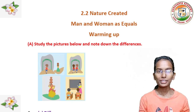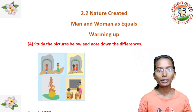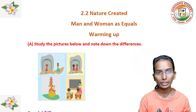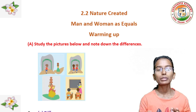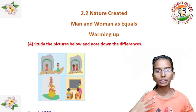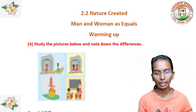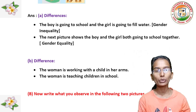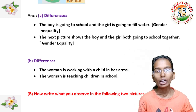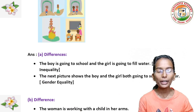We are going to see warming up. First, question 1: set the pictures below and note down the differences. We have given some pictures and we have to observe them and write a short note about it. Observe the pictures carefully. First difference: the boy is going to school and the girl is going to fill water — that is gender inequality. The next picture shows that the boy and girl are both going to school together — that is gender equality.